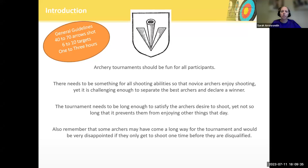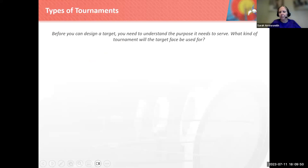Our general guidelines are that we want to shoot between 40 to 70 arrows on six to ten targets, and the tournament should last between one and three hours. Keep in mind that every end, typically people only shoot six arrows. So an end is like a round — people come up, they loose six arrows and step away, and that would be their end.